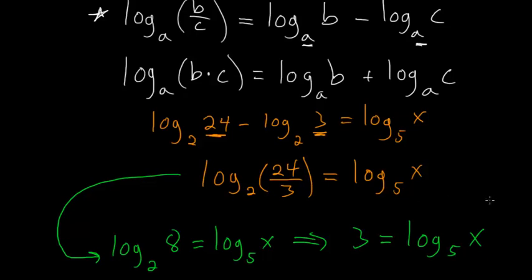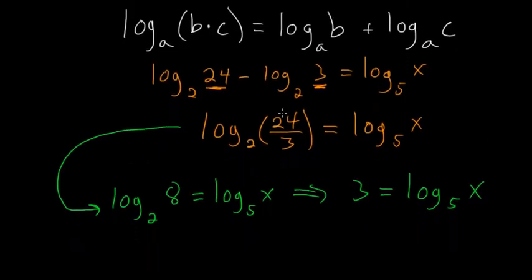We're thinking we have to raise five to some power to get to x. This entire logarithm is equal to that power. So three is our exponent that we're raising five to to get to x. You can see what we're going to do now just becomes five to the third power equals x.